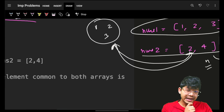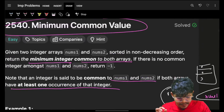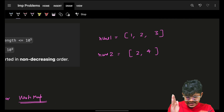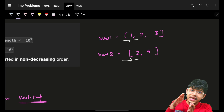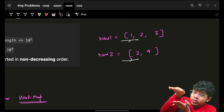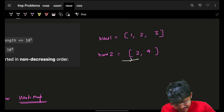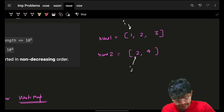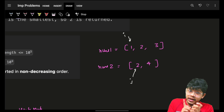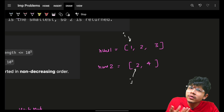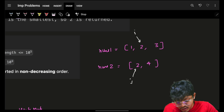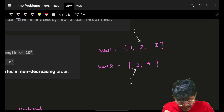We don't need extra space. We can use the fact that both arrays are sorted in non-decreasing order. If we go from the left in both arrays simultaneously, the first element that appears common will be our answer. Going through both arrays simultaneously with two pointers — I and J — we check if they are equal. If not, we move the pointer pointing to the smaller value, because a larger element might match in the future.